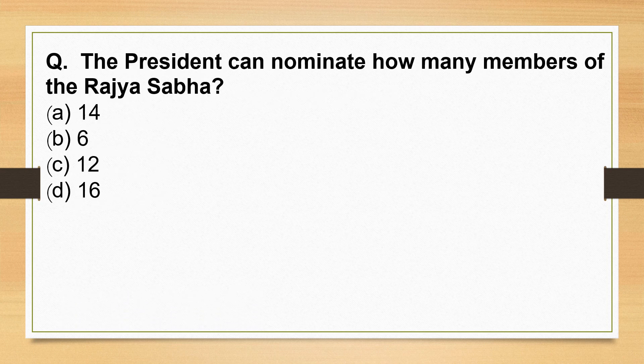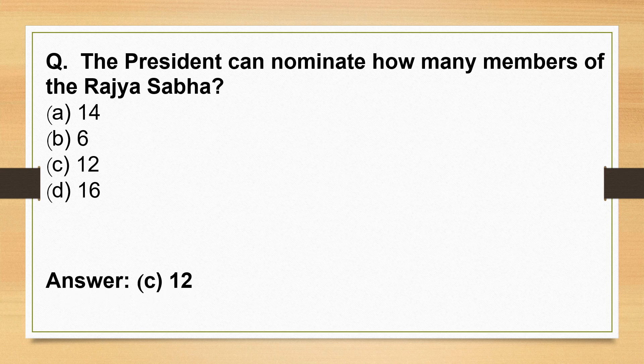The President can nominate how many members of the Rajya Sabha? 12 members. The President appoints these members for their contributions to Art, Literature, Science, and Social Services.